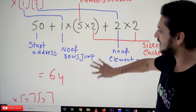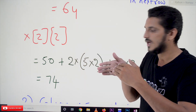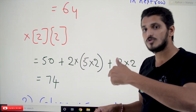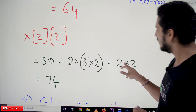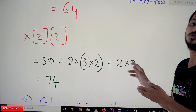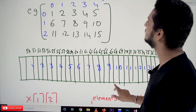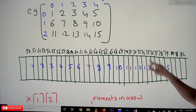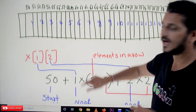Let's take one more example: x[2,2] — second row, second column. Starting address 50, plus 2 rows × 5 elements × 2 bytes = 20, plus 2 elements × 2 bytes = 4. Total: 50 + 20 + 4 = 74. So x[2,2] gives the value 13, which should be at location 74. This confirms how row major order indexing is calculated.